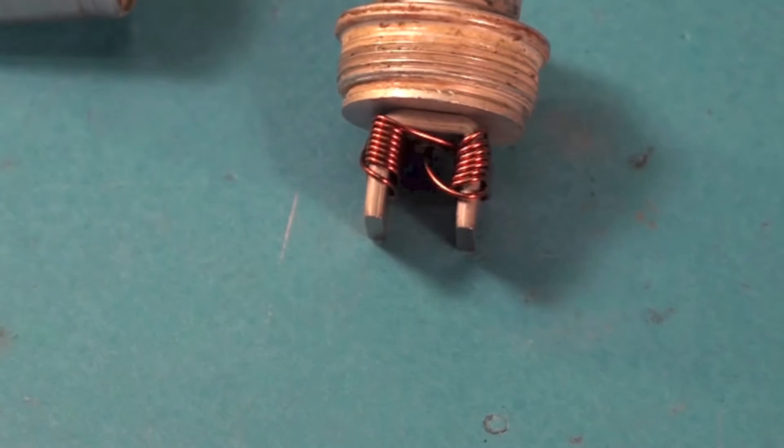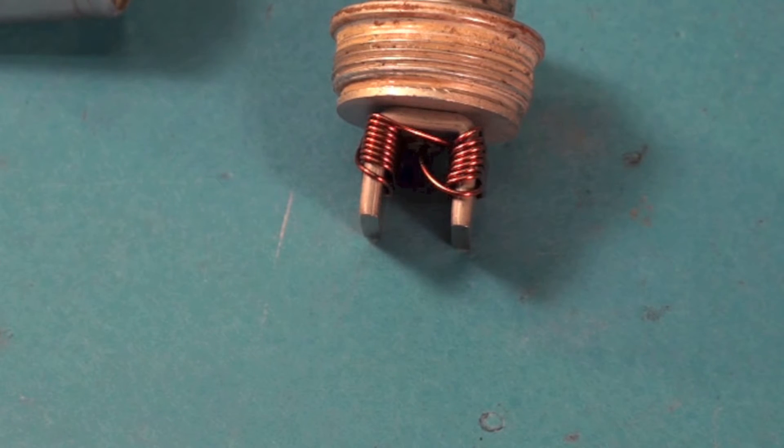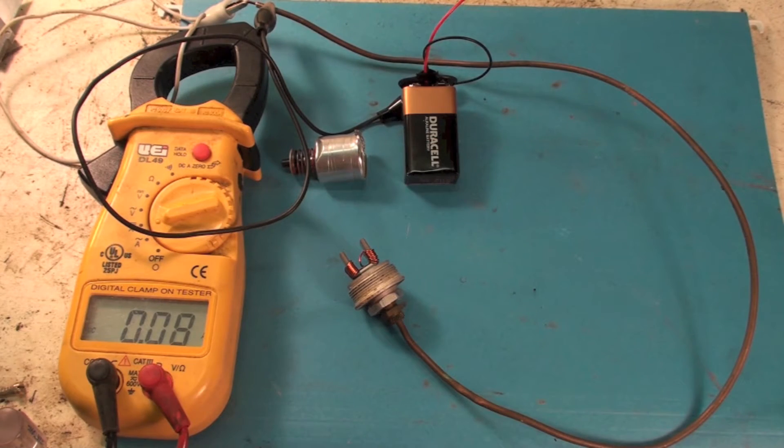There's a solenoid coil right there. That's pretty heavy wire. I don't think I'm gonna burn that out. Now what I'm gonna do is I'm gonna take a nine volt battery and run it through the solenoid coil and see what happens.